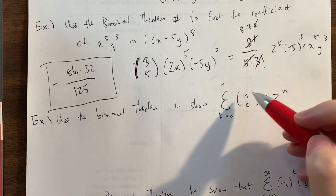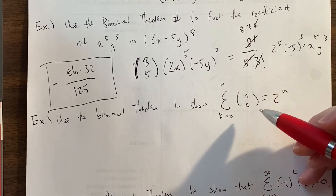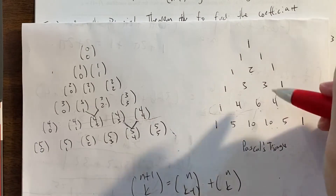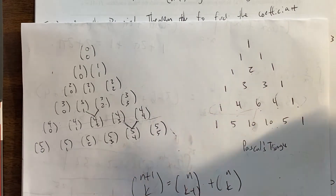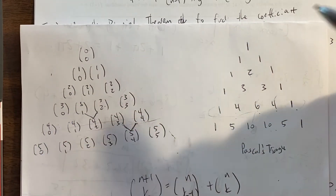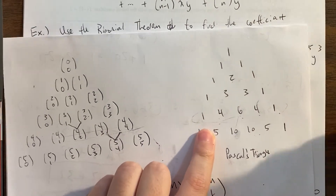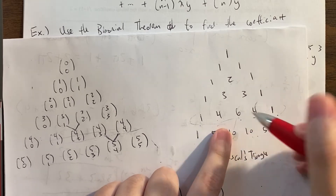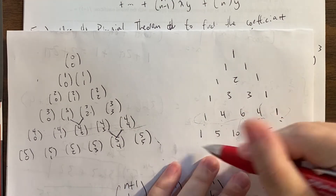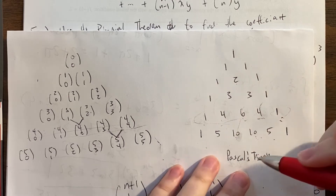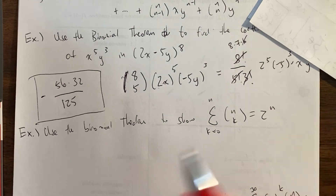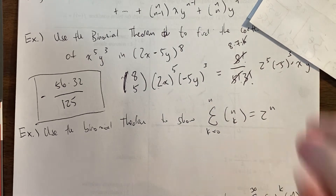Now let's try to prove some relationships using the binomial theorem. We're going to show that if you sum any row of Pascal's triangle — for example summing 1 plus 4 plus 6 plus 4 plus 1 — you get 2 to the n. For the 4th row: 1 plus 4 plus 6 plus 4 plus 1 equals 16, which is 2 to the 4th. Summing the 5th row gives 32, which is 2 to the 5th. It seems like the formula is working. So how are we going to prove this using the binomial theorem?